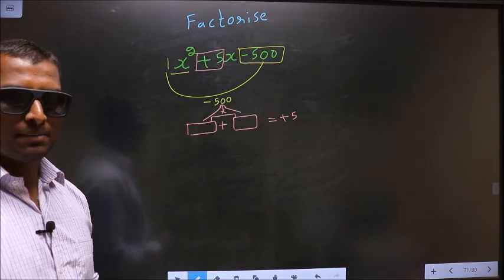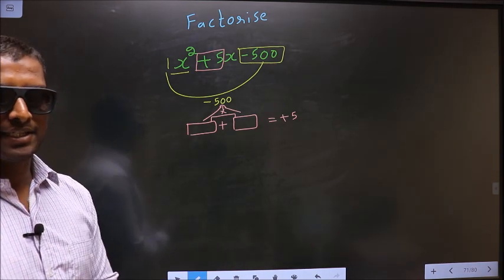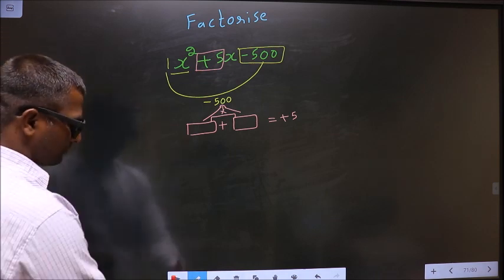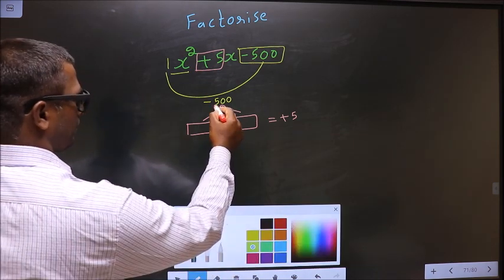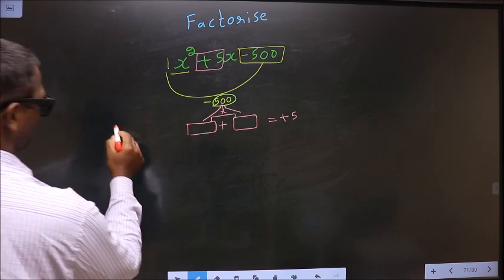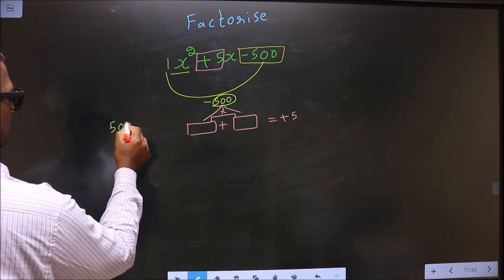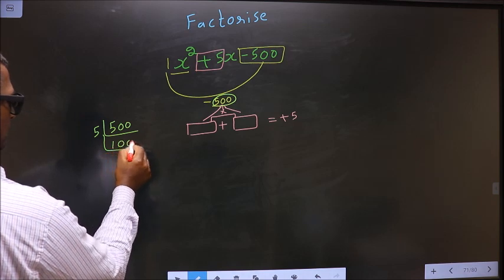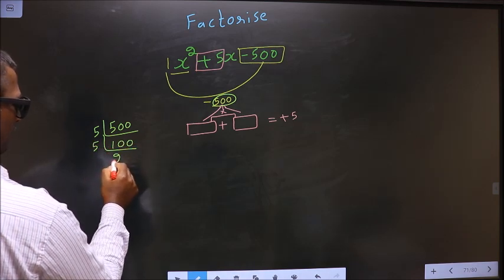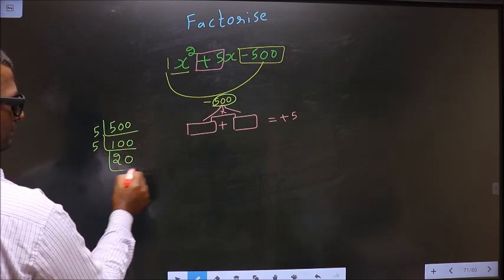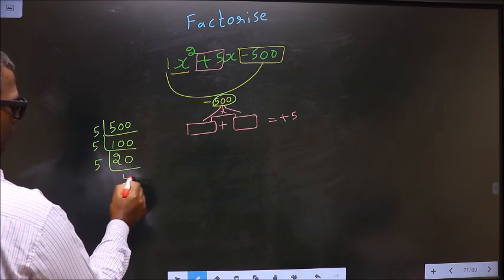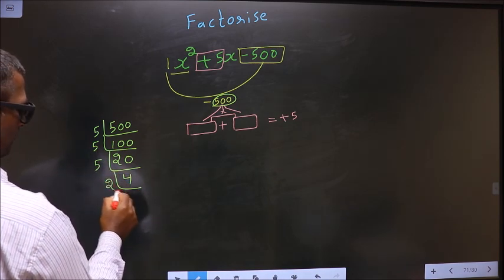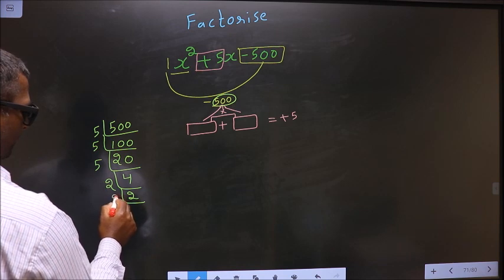Now to get those 2 numbers, we should take LCM of 500. So I start with 5: 5, 100. Again 5: 20. Again 5: 4. Now 2, 2, 2, and 1.